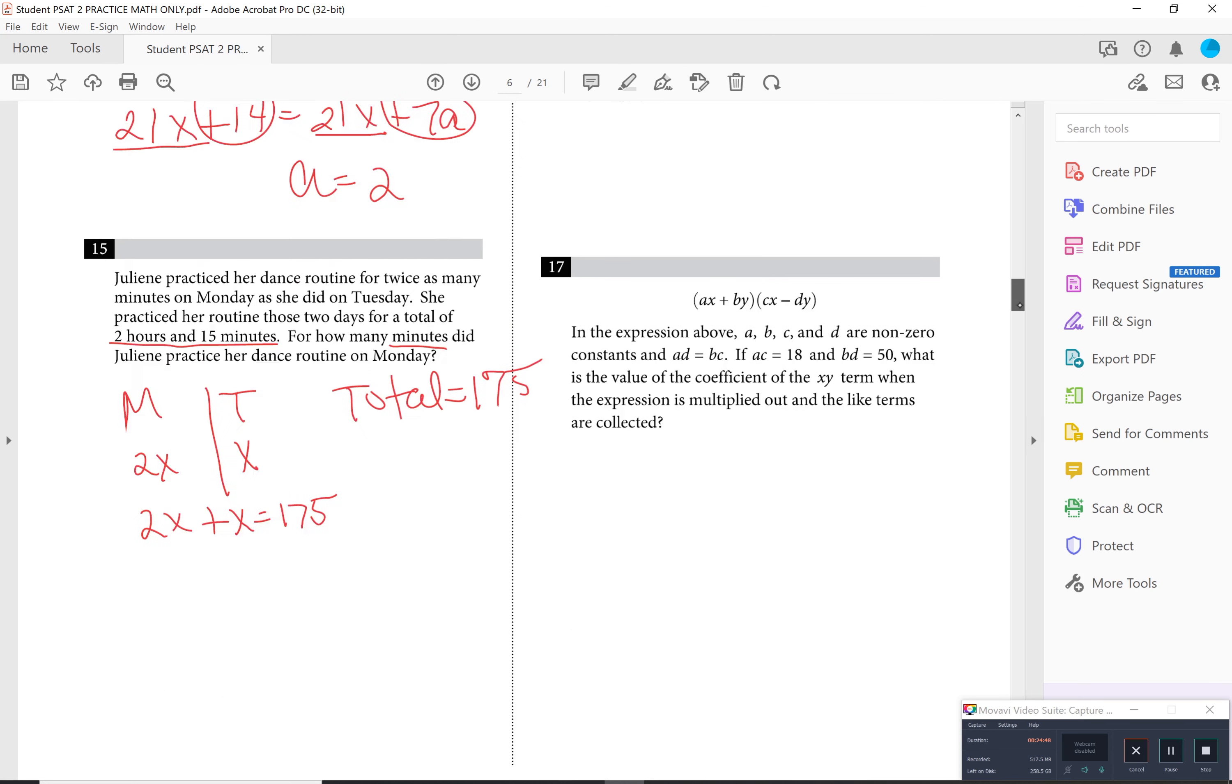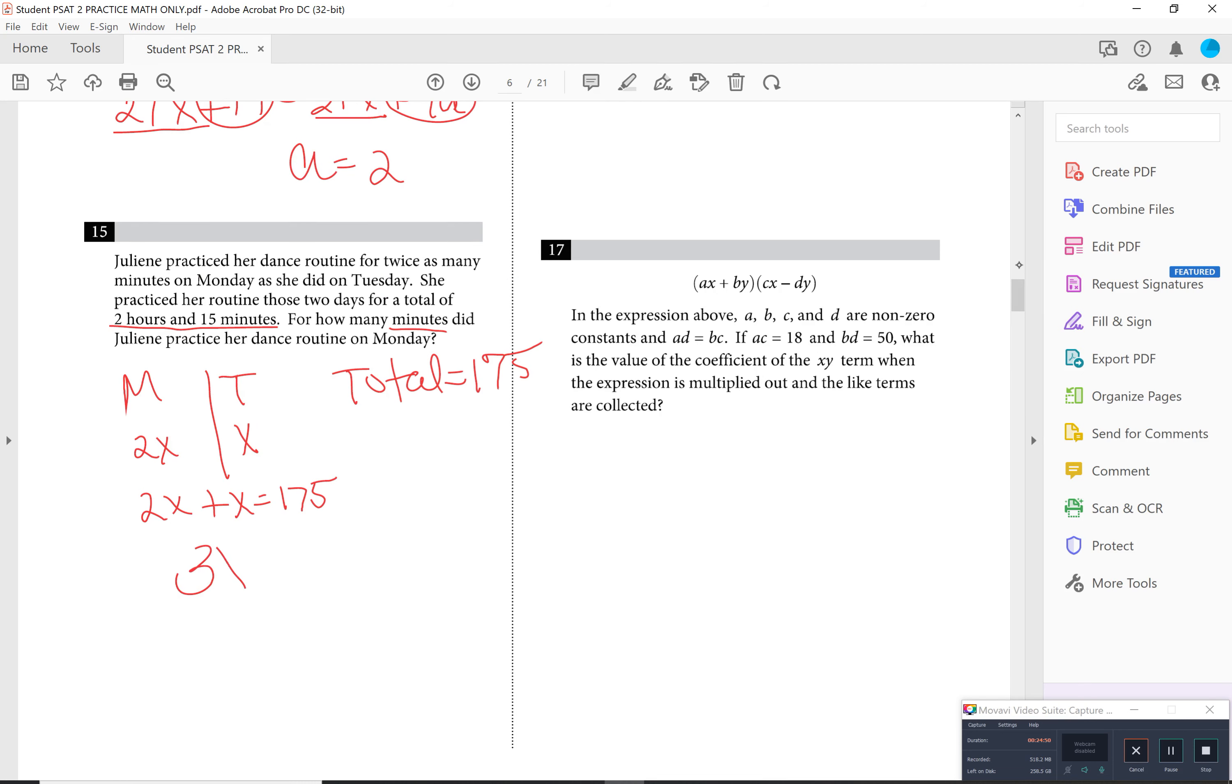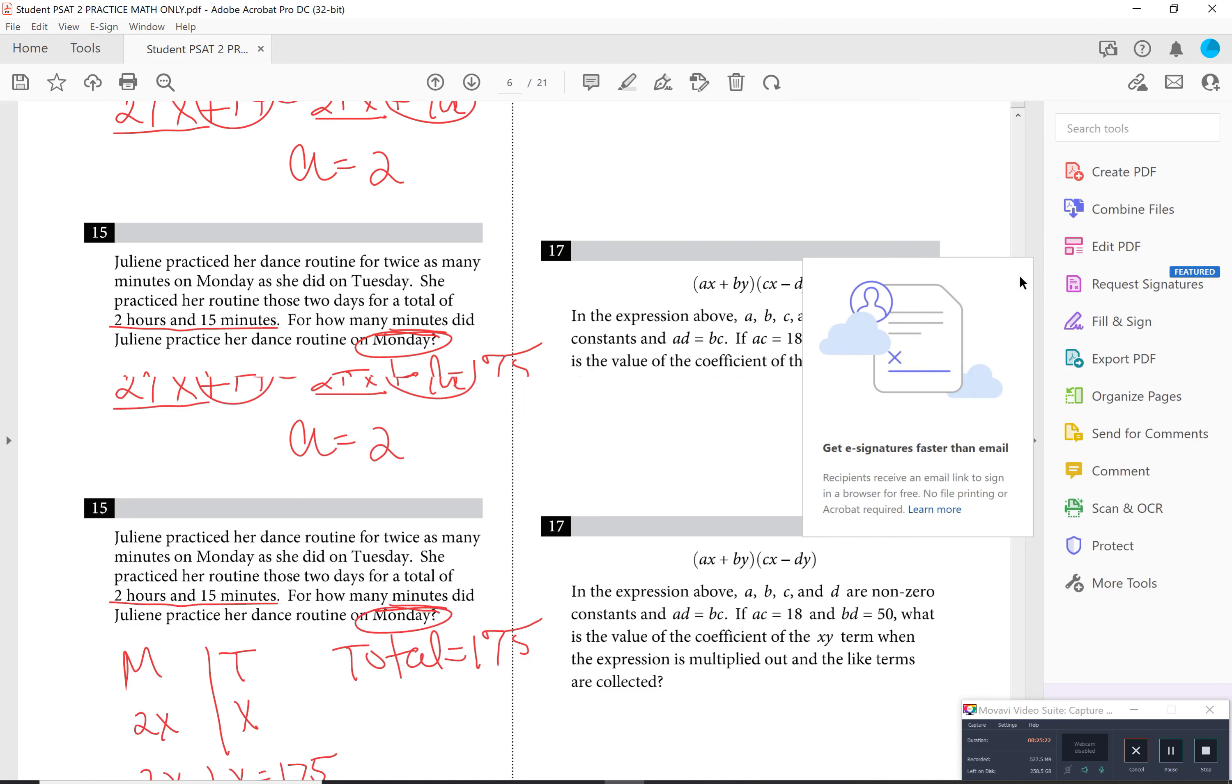So we have 3X is equal to 175, and I divide by 3. Now, don't make this mistake where you get X is equal to 45, and you want to answer the question, and you use the 45. It's not the question. They're asking, how many minutes does she work or practice on Monday? Well, that's twice X. So 2 times 45, since X is 45, well, that's 90, and that's your answer. So be careful with that one.